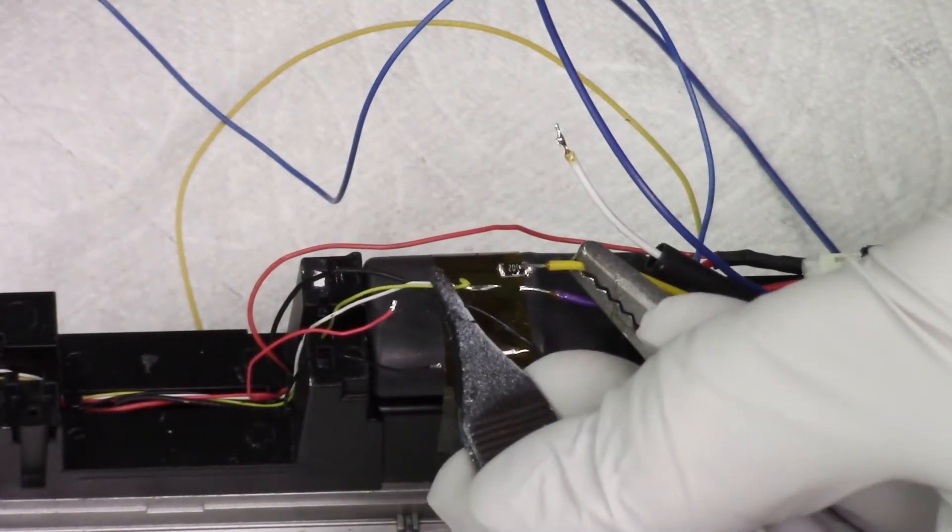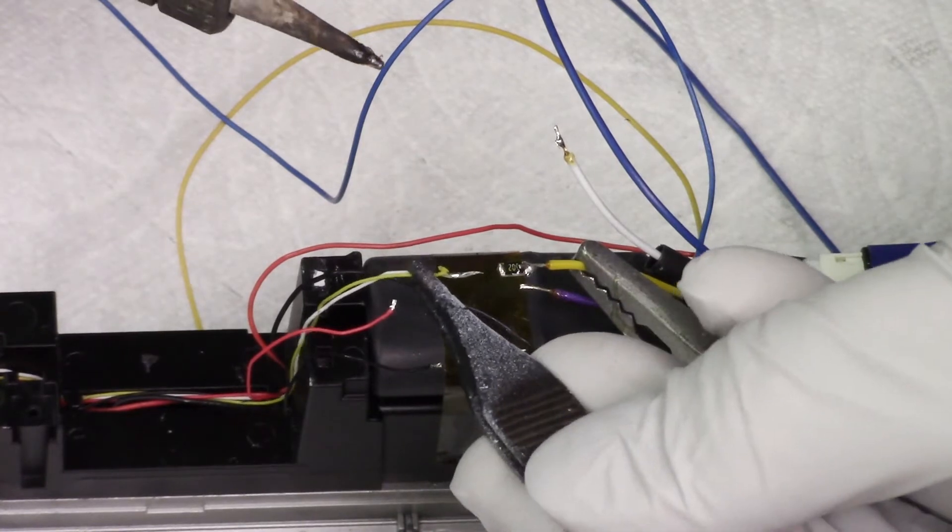I get solder on both ends of the resistor, solder it to one wire, use my clamp to hold it and then solder the other end of the wire to the resistor.